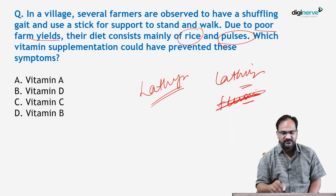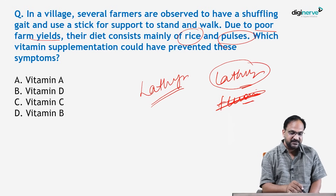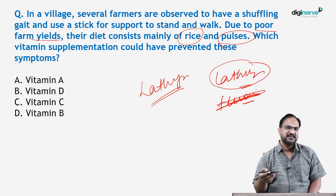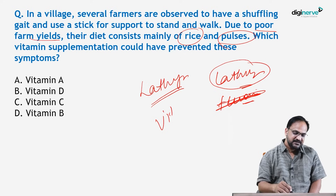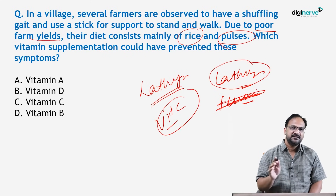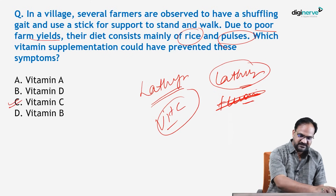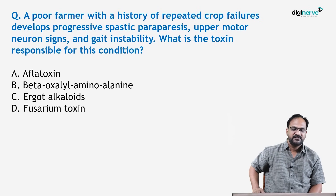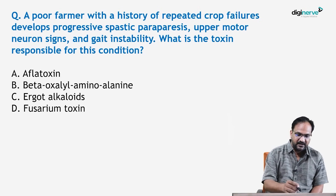Which vitamin supplement could have prevented these symptoms? The vitamin given to prevent symptoms of lathyrism is Vitamin C, as we have discussed in the chapter already. So the answer here is Vitamin C.